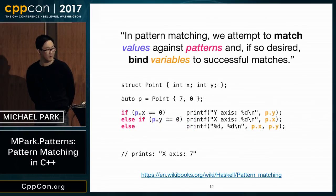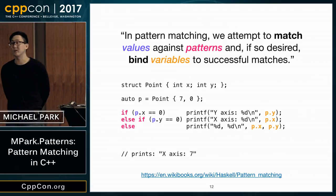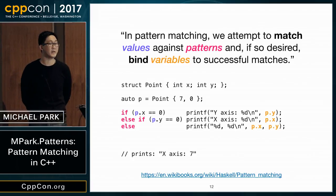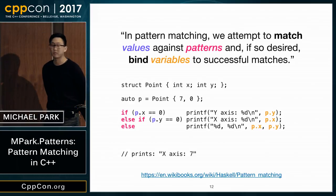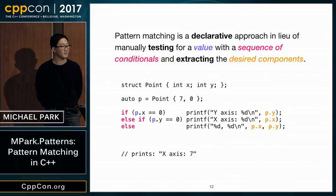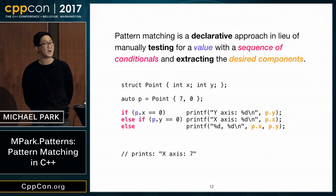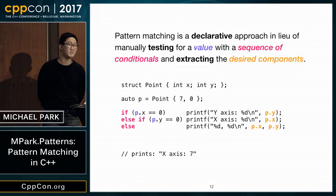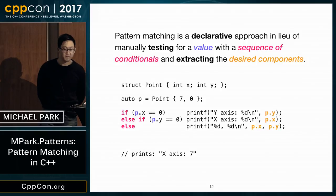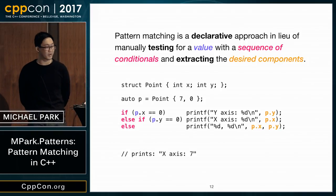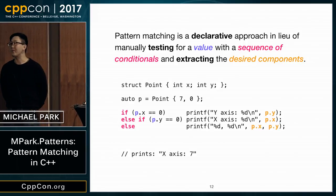The traditional way to write this in C++ might be to manually check individual fields and do the correct thing. Pattern matching is a declarative approach in lieu of manually testing for a value with a sequence of conditionals and extracting the desired components. The patterns you write are a declarative way of describing your conditionals.